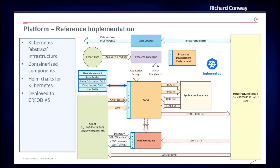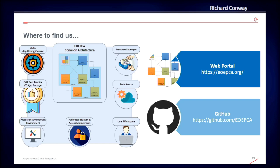We deploy to a Kubernetes cluster, which provides an infrastructure-agnostic target for the deployment of our reference system components. Each building block is released as a container image with supporting Helm chart for Kubernetes deployment. All of our work is open source on GitHub — just search for the EOEPCA organisation — and you can also visit our web portal. We welcome questions and feedback. Thanks for your attention.